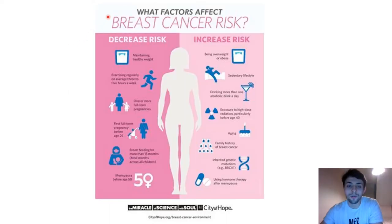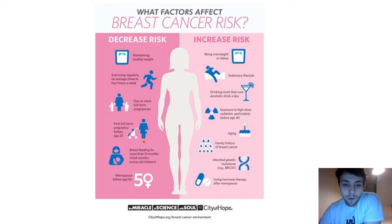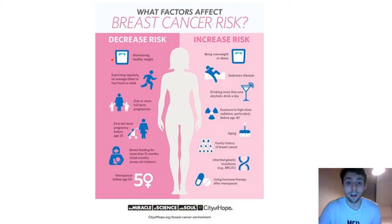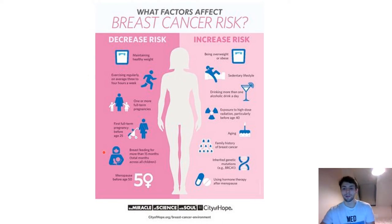This image shows some more risk factors from City of Hope. It shows that having a full first full-term pregnancy before age 25, maintaining a healthy weight, exercising regularly, one or more full-term pregnancies, breastfeeding once you have children, and menopause before age 50 — all of these decrease your risk of breast cancer. You can pause the video to read the full image.